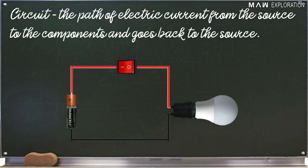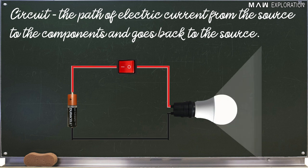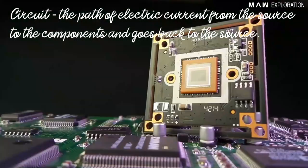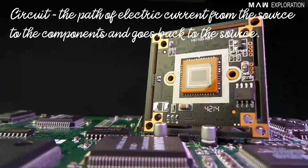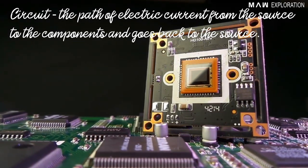Number two, circuit. Circuit is the path of electric current from the source to the components and goes back to the source. It could be a simple circuit or a complex circuit. It is where the current or electrons are flowing.